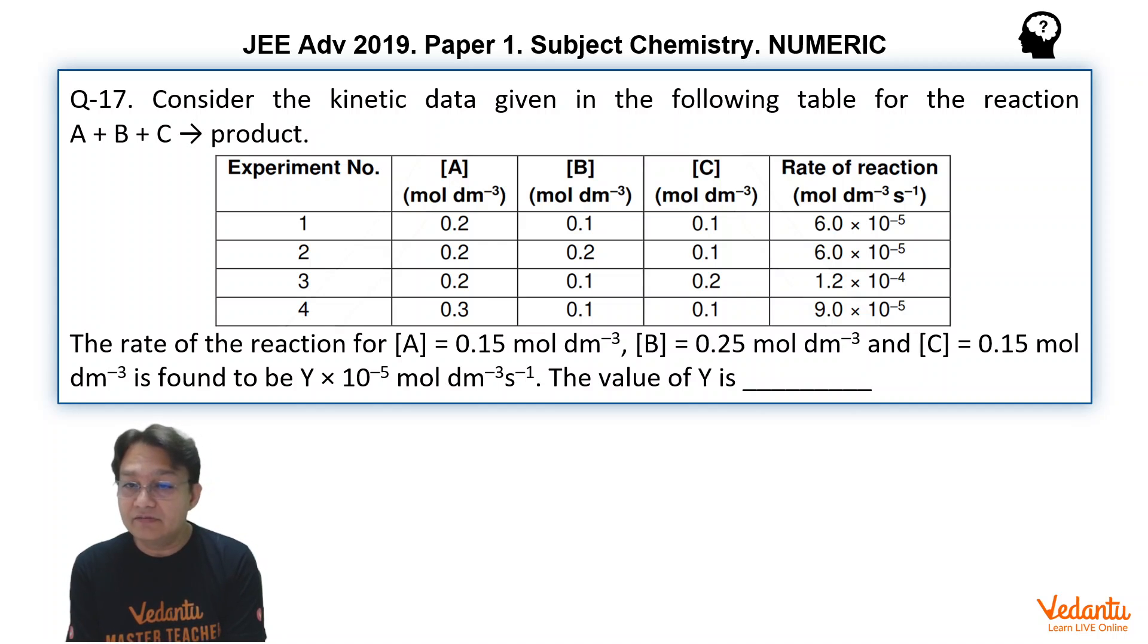And as a result, we can see the rate becomes 1.2 into 10 to the power of 4, which is 12 into 10 to the power of 5. So simply, it is doubled.